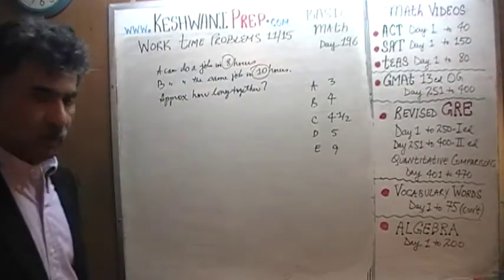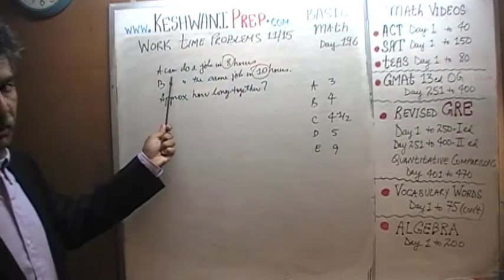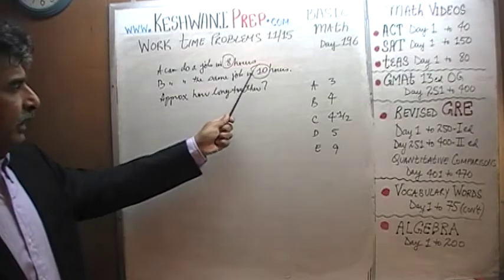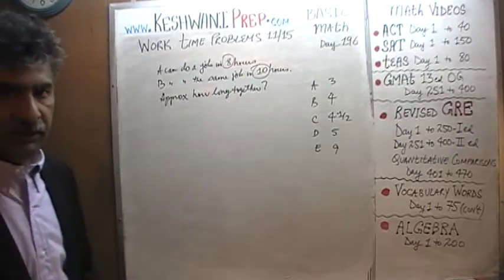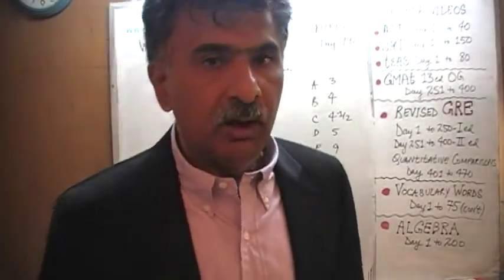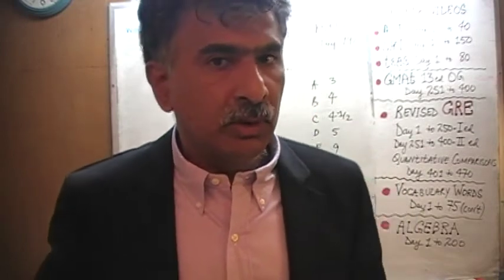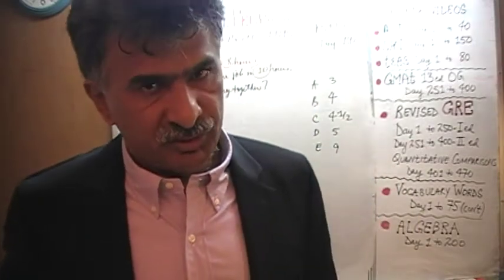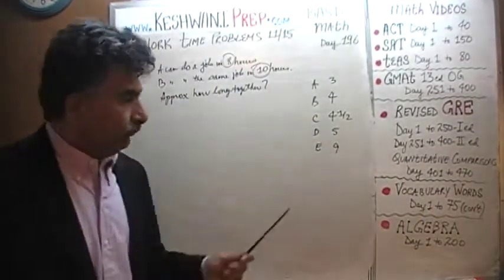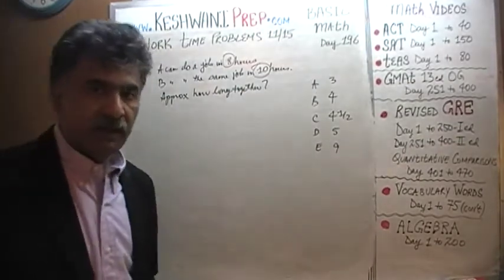We are told that we have two workers, A and B. A can do a certain job in 8 hours; B takes 10 hours to do the exact same job. The question is: how long will they take working together at their constant paces to finish the job? The answer choices are 3, 4, 4.5, 5, and 9.